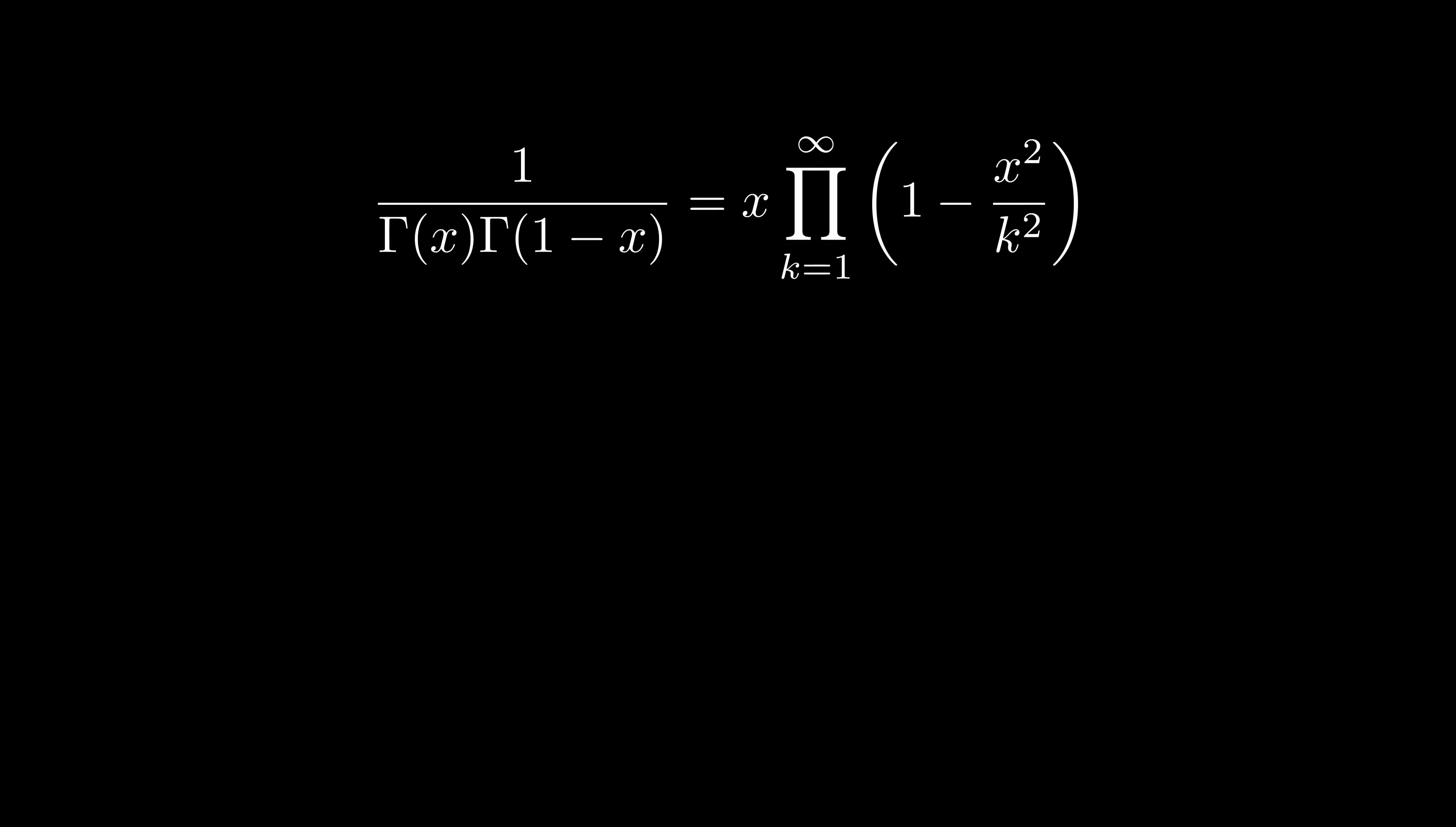Now, if we look back at the sine product formula, we can see that we almost have the same thing, except for this pi squared in the denominator. But if we do sine of pi x instead of just sine of x, we'll introduce a pi squared in the numerator which cancels with it. And if we divide both sides by pi, we get a perfect match. And thus, we've established the connection between the gamma function and sine.